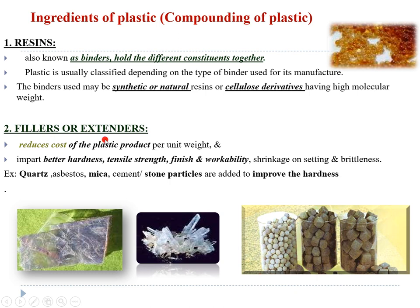Next we have fillers or extenders. We fill our plastic with some more ingredients so that the amount of plastic required is less, which reduces the cost. If the fillers are hard substances like stone particles, they will increase the hardness and tensile strength of the plastic. Examples include quartz, mica, cement, and stone particles — these are hard particles that improve the hardness of the plastic.